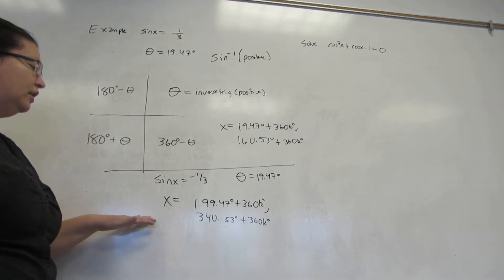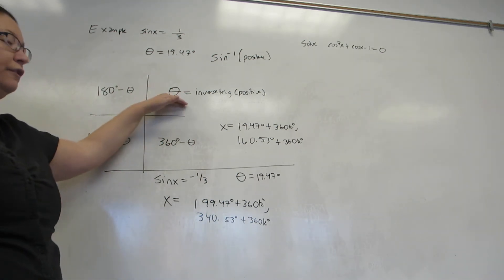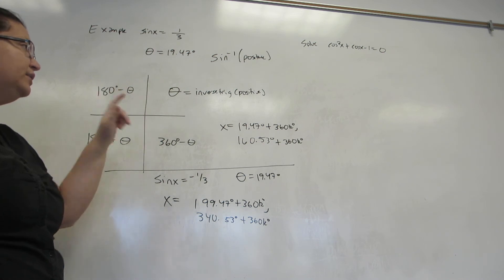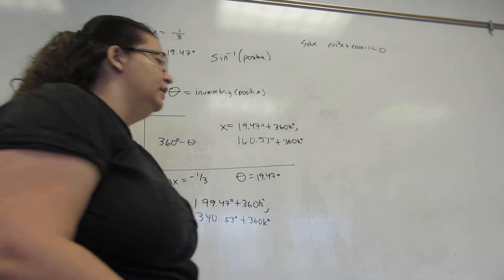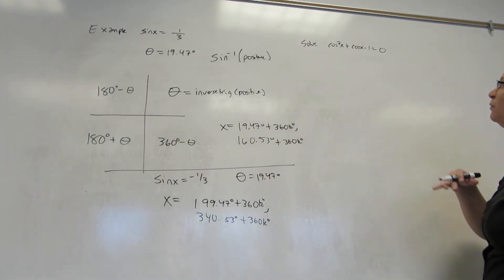So, when you're doing a non-unit circle answer, always get the first quadrant one and then force it to be in the quadrant you want it to be in. Now, let's do one more example from the beginning.